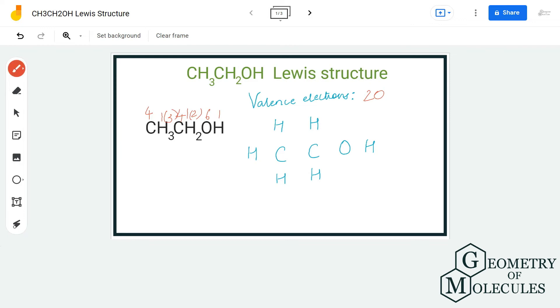First, I'm going to place a pair of electrons between carbon and hydrogen atoms, then between carbon and oxygen atom, and oxygen and hydrogen atom.